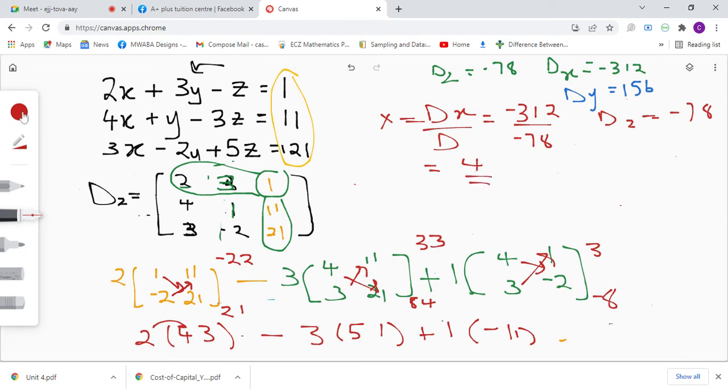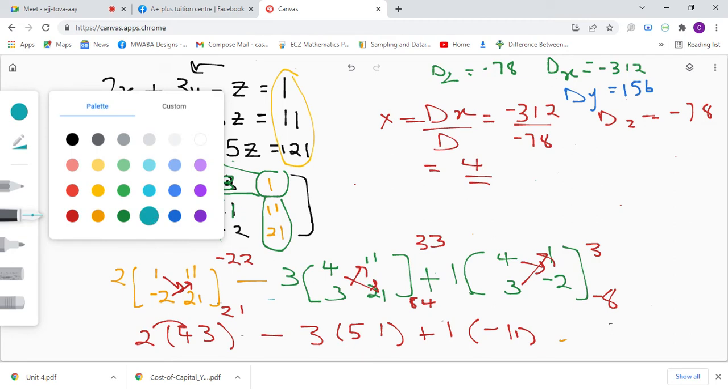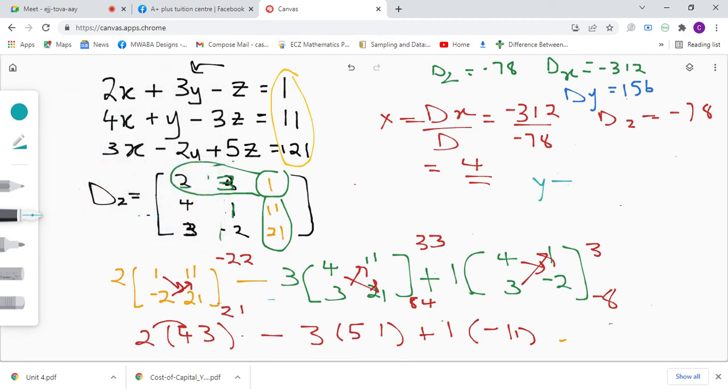For y, we're going to say y equals dy over d. dy is 156 divided by negative 78, and 156 divided by 78 gives us negative 2. Y equals negative 2.